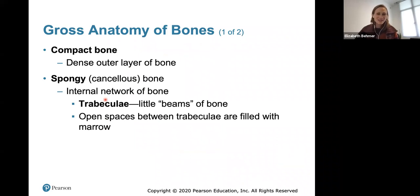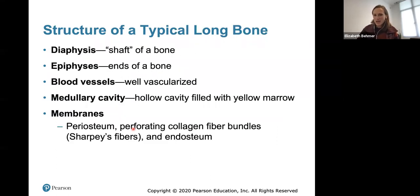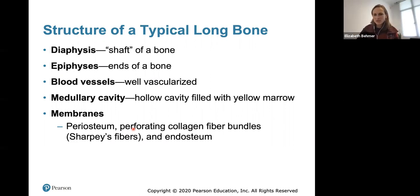Now for the gross anatomy of bones. Compact bone is the dense outer layer, and spongy or cancellous bone is the internal network with trabeculae — little beam-like structures — and open spaces filled with marrow. The diaphysis is the shaft of the bone. The epiphyses are the ends, either proximal or distal. Bones are well vascularized with blood vessels. The medullary cavity is hollow and filled with yellow marrow. Coverings include the periosteum, Sharpey's fibers, and the endosteum.